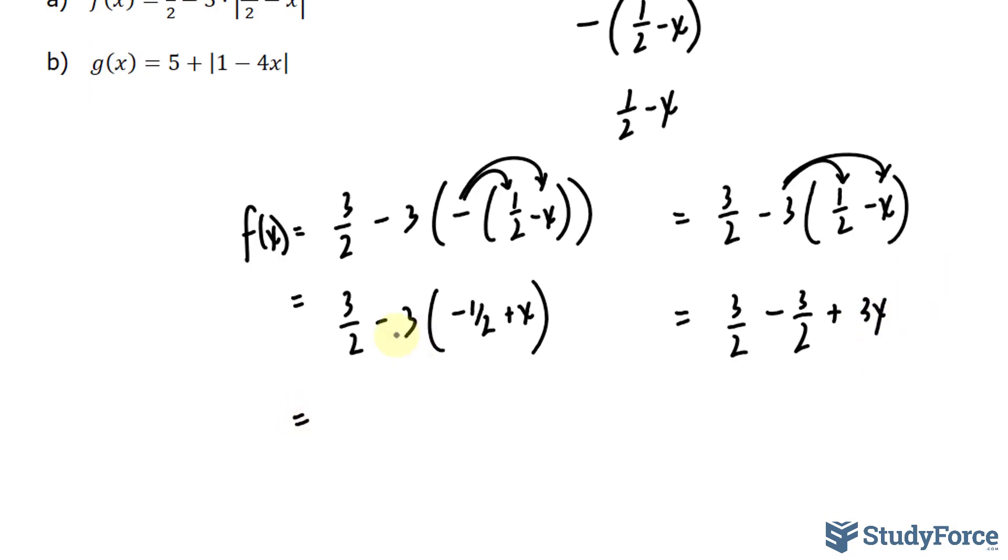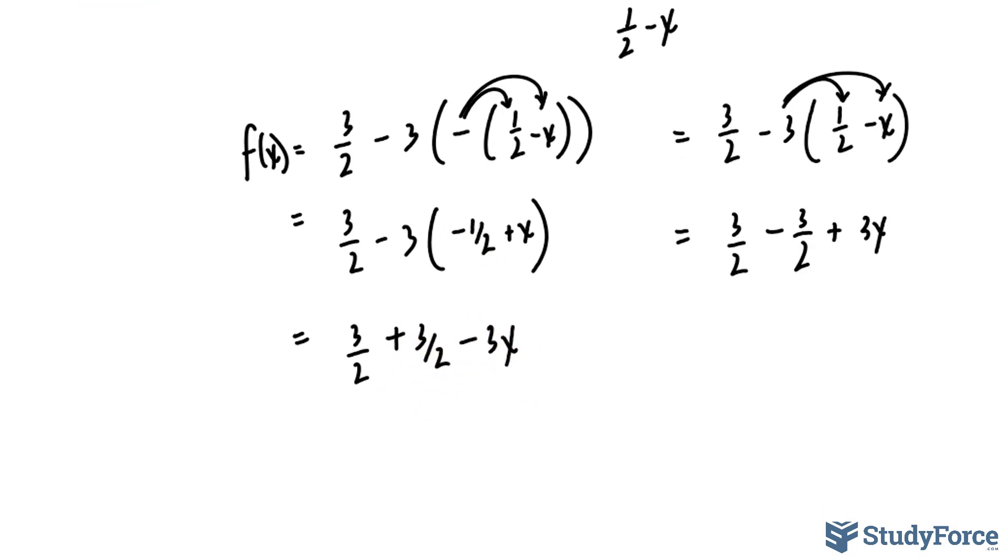Let's continue simplifying. I'll multiply negative 3 into negative 1 over 2, which makes it positive 3 over 2 and negative 3x. 3 over 2 plus 3 over 2 is 3, so 3 minus 3x. And over here, subtracting these two gives us 0, so we're left with 3x.